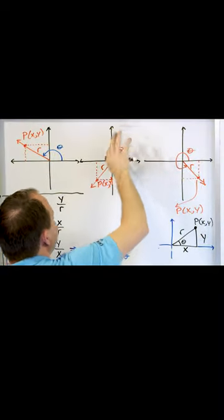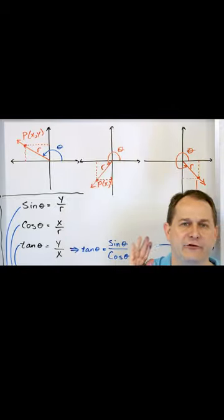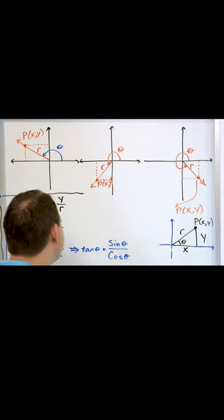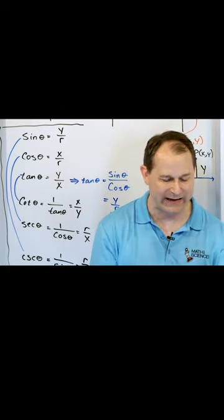In quadrant one, they're always positive for both x and y. But as you go around, the x and y values can change positive, negative. And that means that all of these trig functions can be positive or negative, depending on what quadrant you are in.